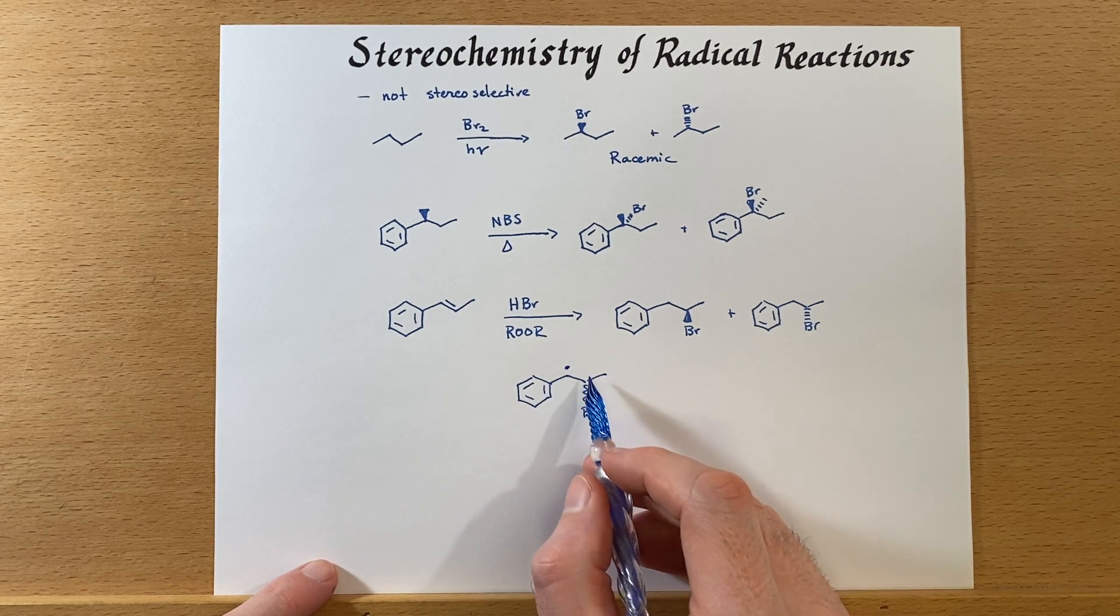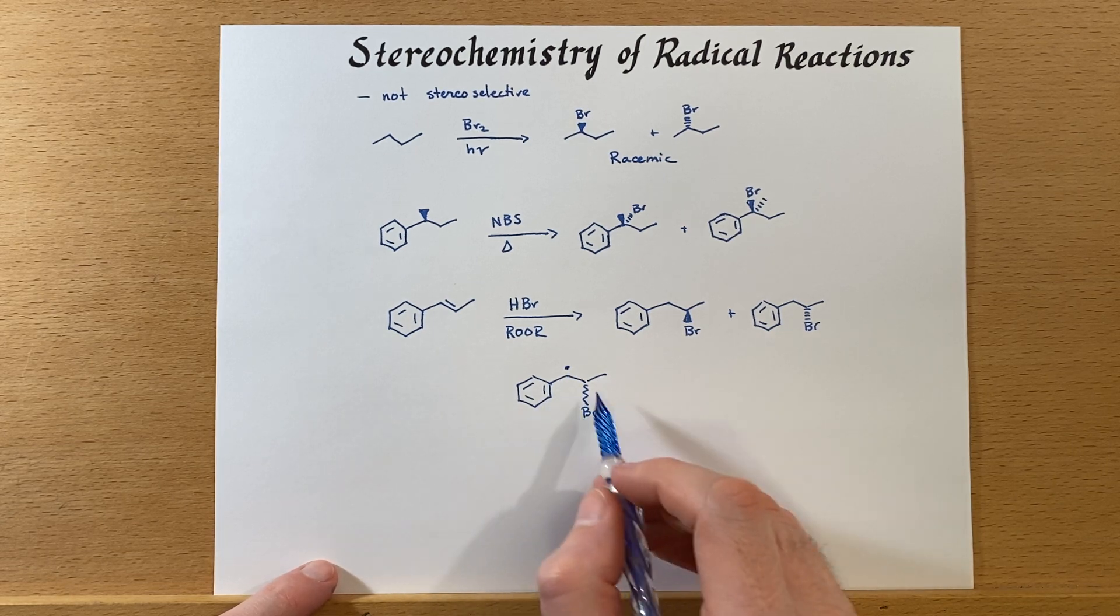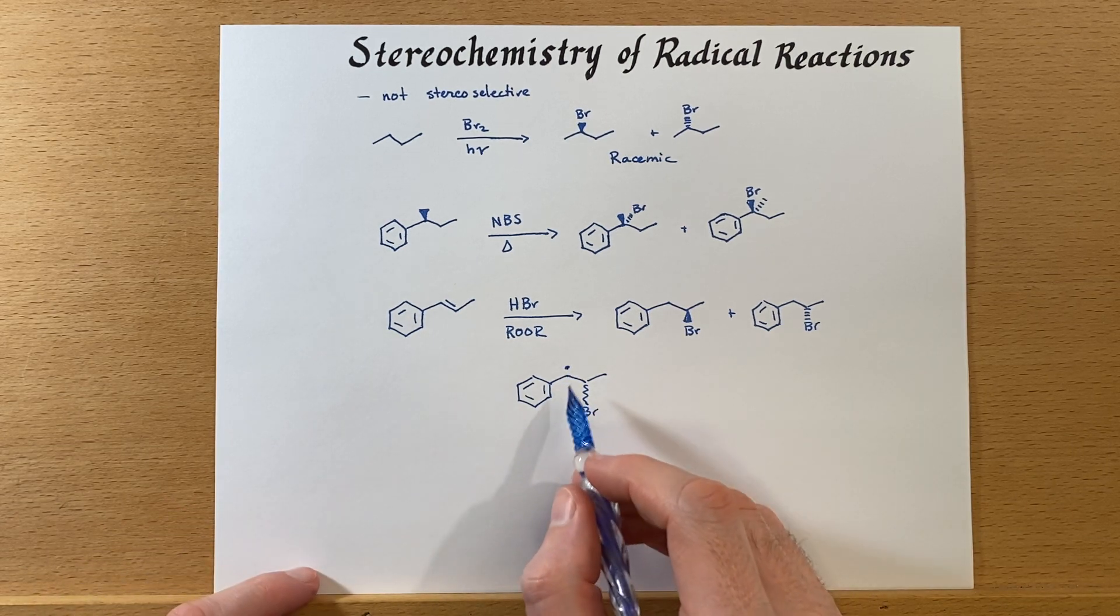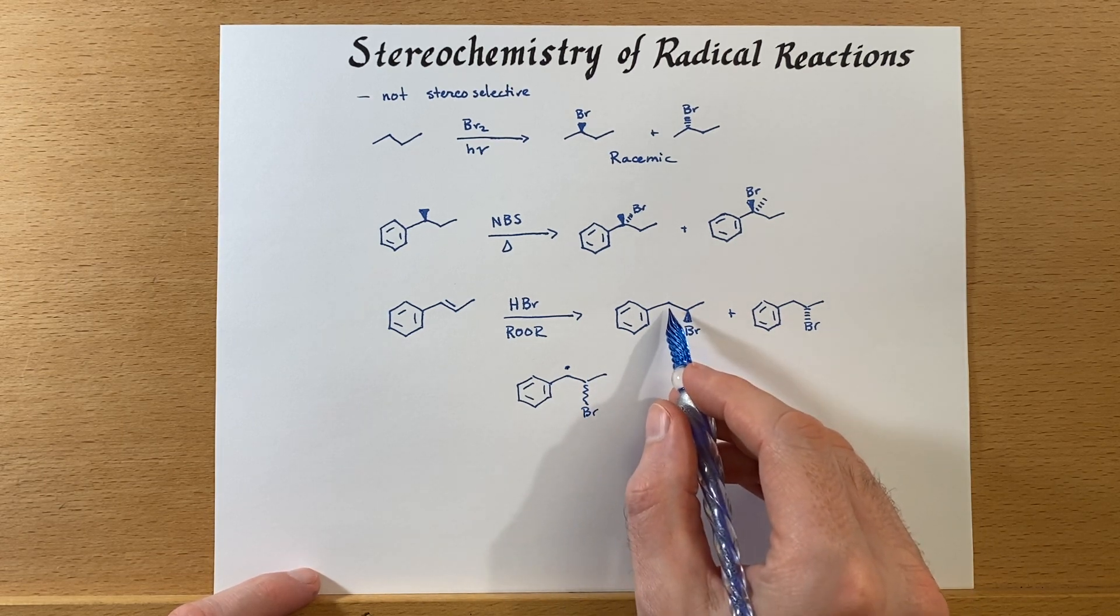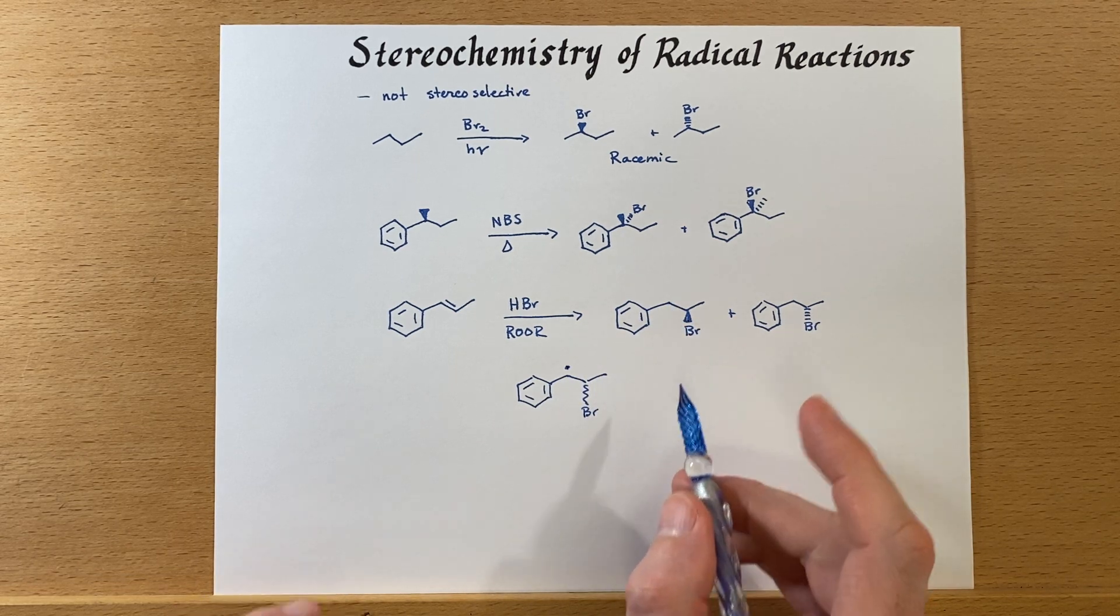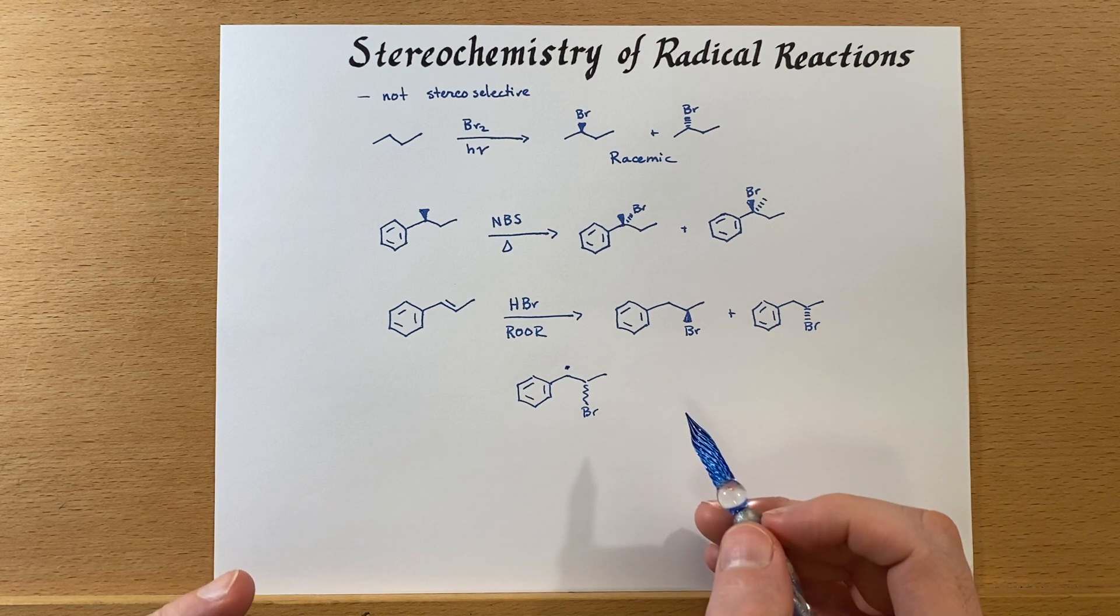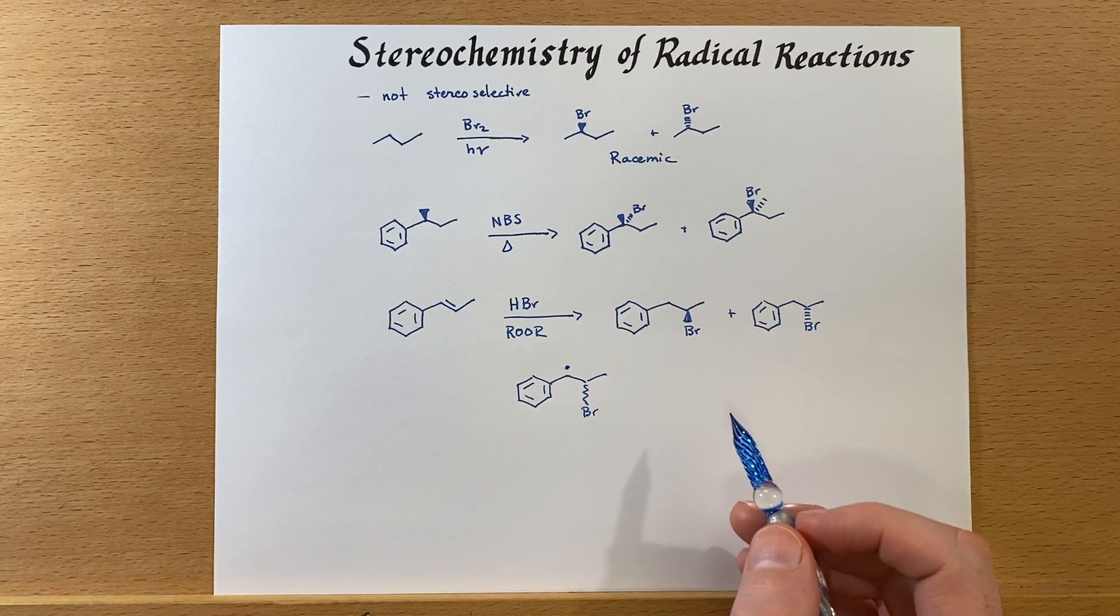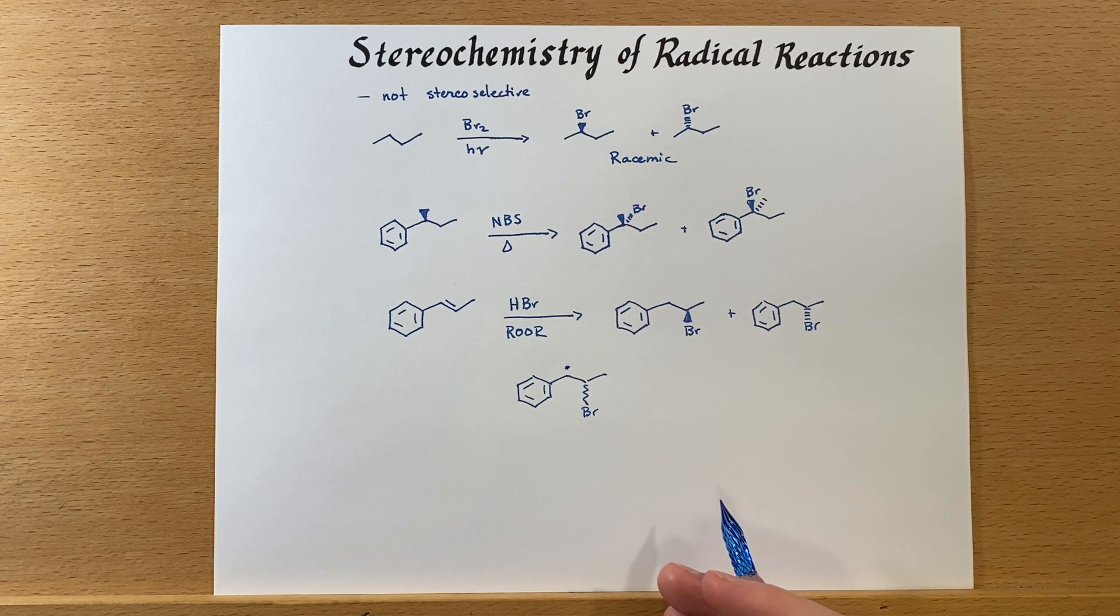When we have the choice of a benzylic position and we're doing some kind of adding bromine to this, we're going to vastly favor having the radical form in that benzylic position. So it's selective, but it's not stereoselective. And that is one of the major drawbacks behind radical reactions.